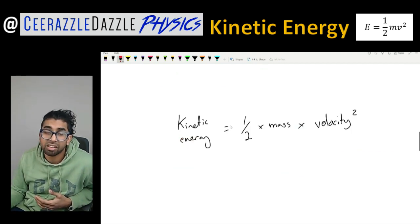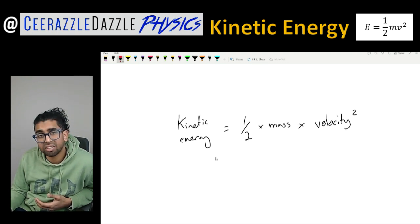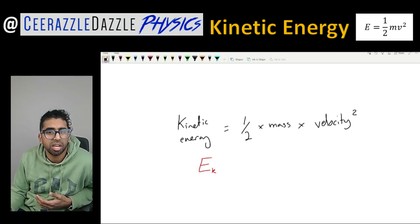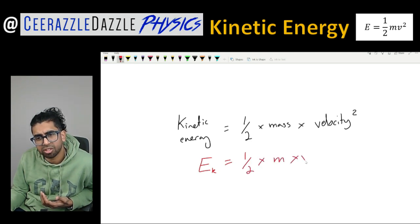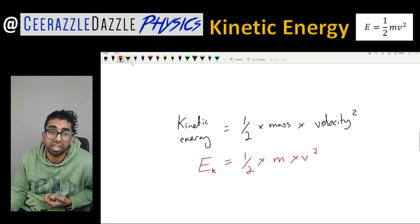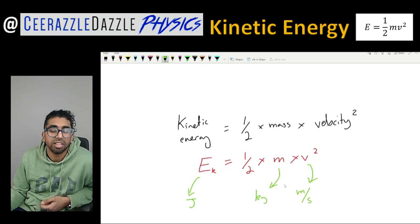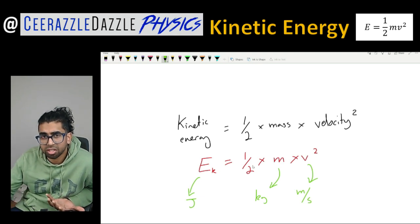So what is the formula to calculate the kinetic energy of an object? Kinetic energy equals a half times mass times velocity squared. In symbols: E (or Ek) equals a half times m times v squared. The units are: energy in joules, mass in kilograms, and velocity in meters per second. The half does not have units.